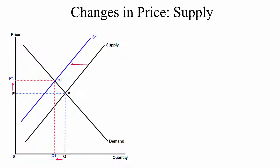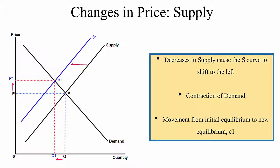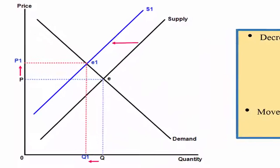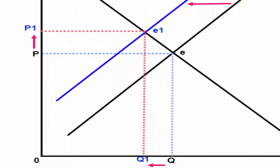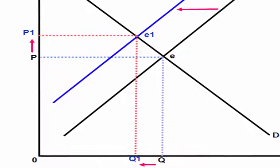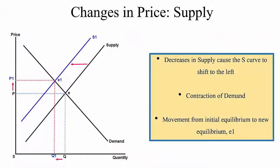The converse is also true if costs of production increase or bad weather destroys part of the harvest — as is currently being seen in Spain with iceberg lettuces and broccoli — then the supply curve shifts to the left. A leftward shift in supply raises the price of the product; some consumers are priced out of the market and cannot afford the product. We therefore contract up the demand curve from the original equilibrium E to a new equilibrium E1, moving from price P and quantity Q to P1 and Q1, and the market clears at that new equilibrium price.